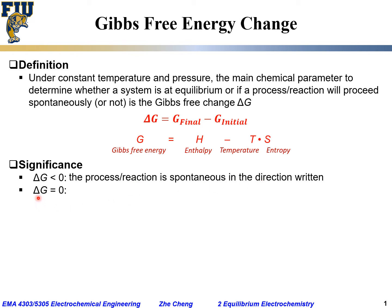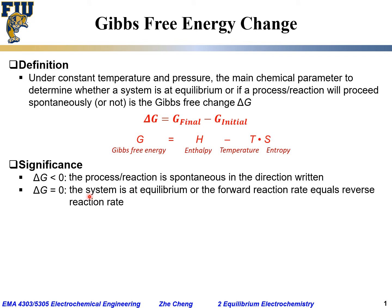On the other hand, if delta G is zero for a process or a reaction, we say the system is at equilibrium. Another way to say it: the forward reaction rate would equal the reverse reaction rate. One direction versus the other direction, the reaction rate or process rate is the same. That's when the system is at equilibrium, when delta G equals zero.